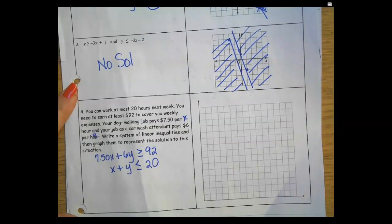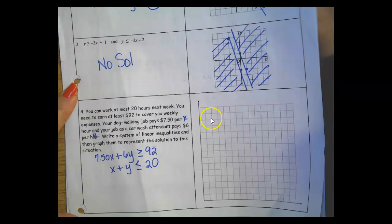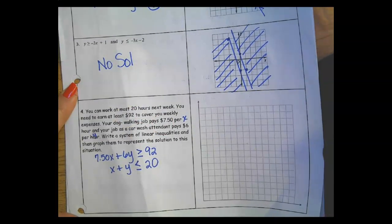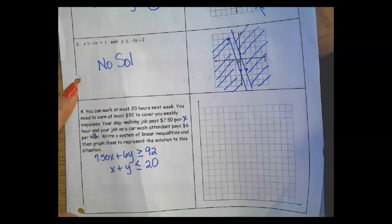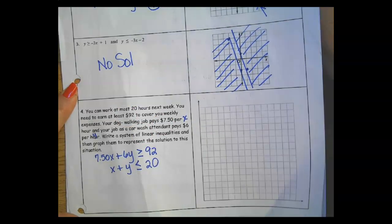I'm putting $7.50x plus $6y, and I need that keyboard on Desmos, so greater than or equal to 92.